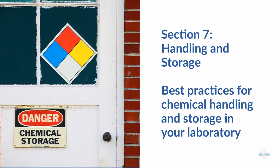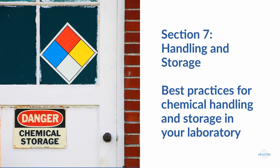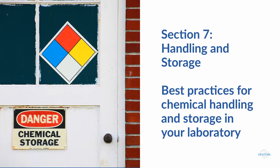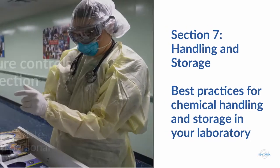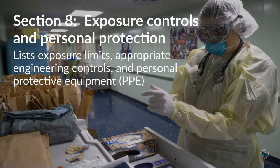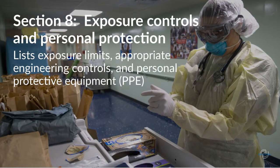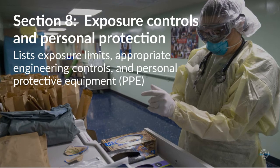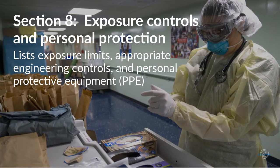After receiving your chemicals, you'll need to know how to store them. Section 7, Handling and Storage, describes safe handling and storage, including incompatibilities with other chemicals. Section 8 describes exposure limits, threshold limit values, and any other exposure limits used or recommended by the manufacturer preparing the SDS. This section also includes appropriate engineering controls and PPE.